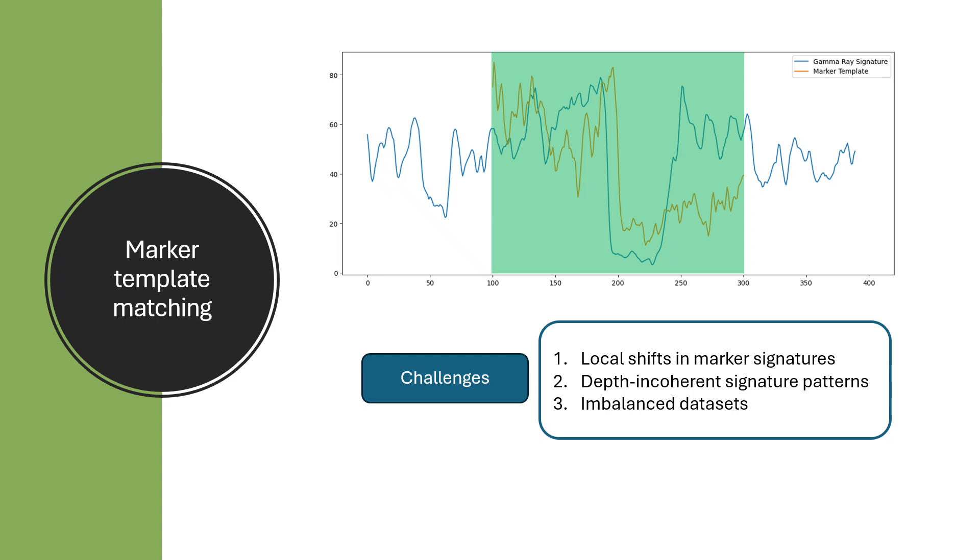Currently, a semi-automated DTW process is used to match the well logs with marker signature using a sliding window. The challenges we face for complete automation are local shifts in marker signature, depth-incoherent signature patterns, and imbalanced data sets.